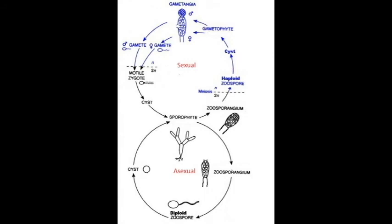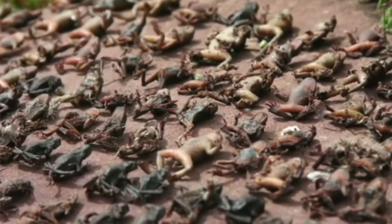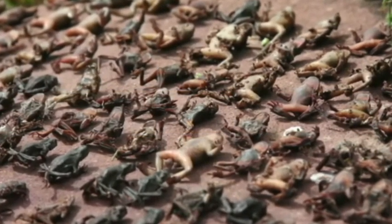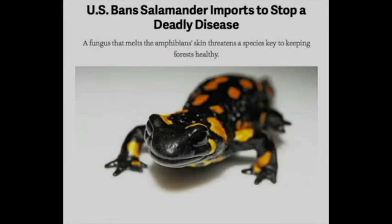The chytrid in the sporophyte phase may then reproduce asexually or once again start the sexual reproductive cycle. Batrachochytrium dendrobatidis causes a fungal infection known as chytridiomycosis. Over the last 30 years, it has been thought to cause a drastic decline in populations and, in severe cases, extinction.